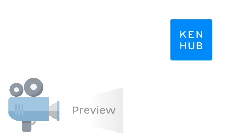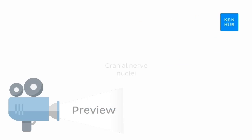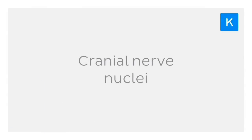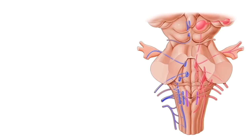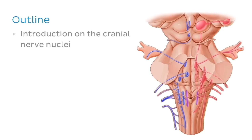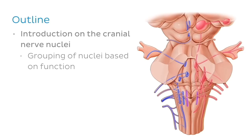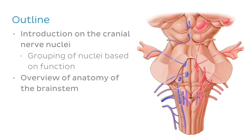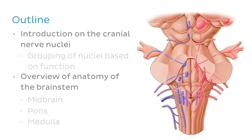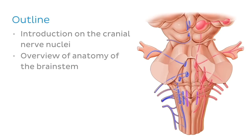Hey everyone, this is Nicole from KenHub and welcome to our tutorial on the anatomy of the cranial nerve nuclei. We're going to begin with an introduction on what the cranial nerve nuclei actually are, and we'll also be making use of a grouping of nuclei based on their function. We're also going to look at a brief overview of the anatomy of the brainstem — that is the midbrain, the pons, and the medulla — and that overview will roughly present the cranial nerve contents in each segment of the brainstem.